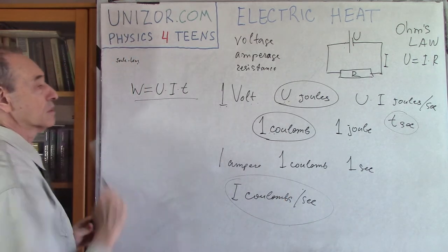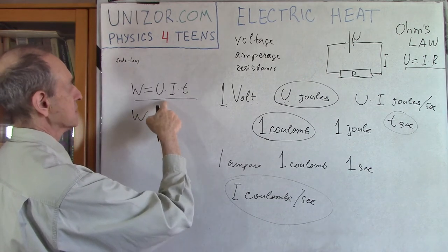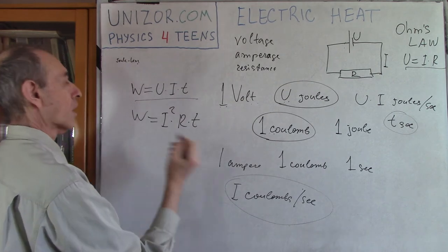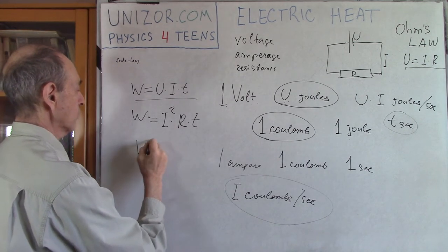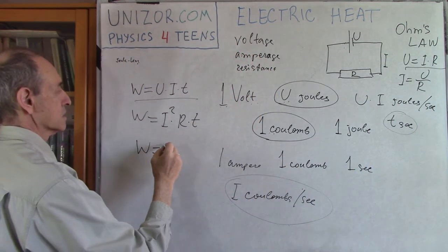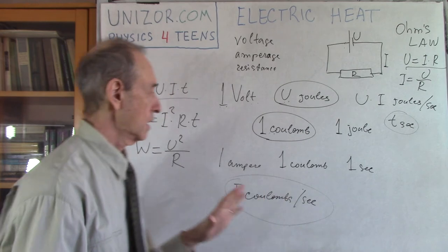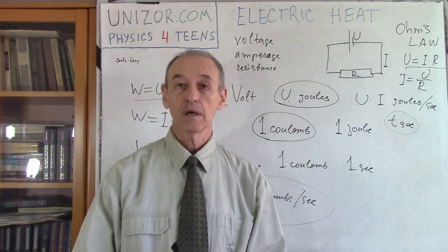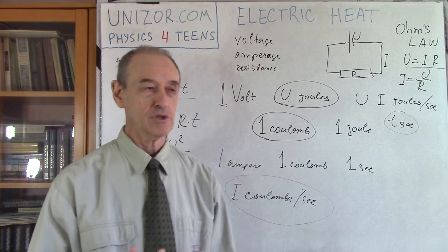This formula can be slightly modified using Ohm's Law. If you substitute U = I·R, you get W = I²·R·T. This is a good formula when current is constant. If voltage is constant, use I = U/R, and you get W = U²·T/R. These are different formulas that give you the amount of work and therefore the amount of heat — not in calories but in joules — which are the same measurements of energy, just different scales.